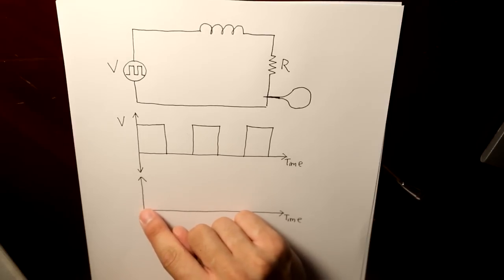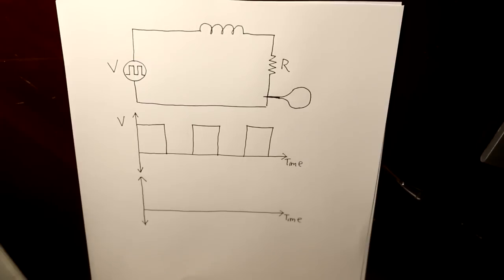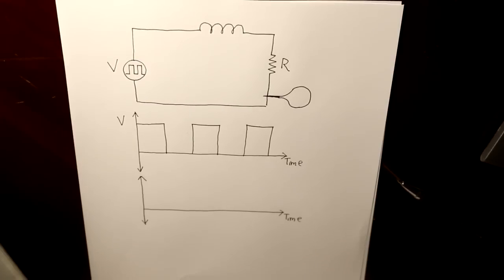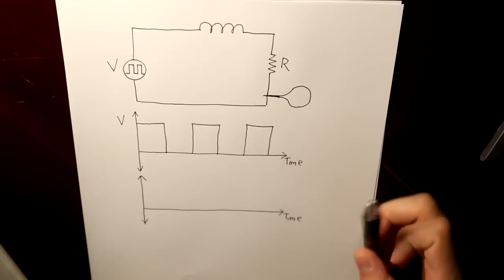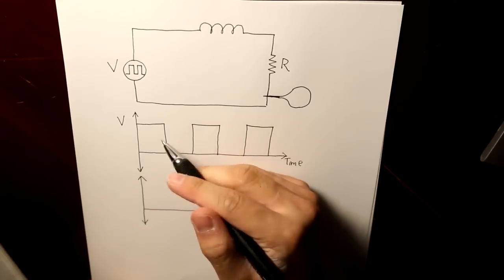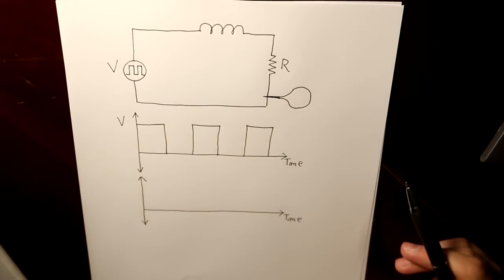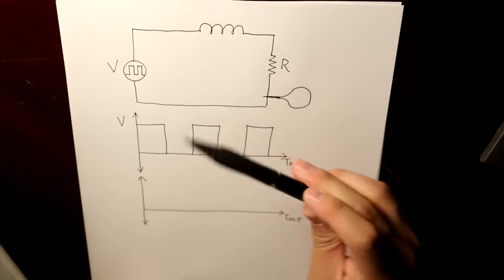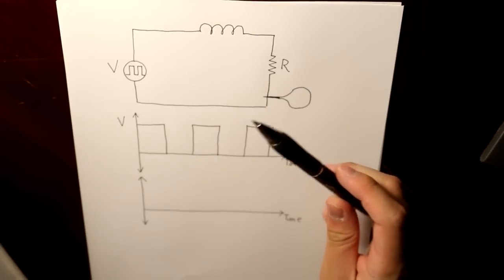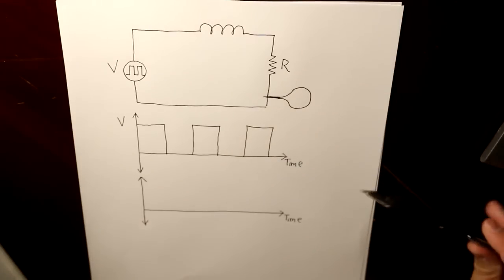It's not going to instantaneously change. It's going to gradually change until it reaches a plateau all the way here. Because the inductor is storing energy. So this is how the current is going to look like.